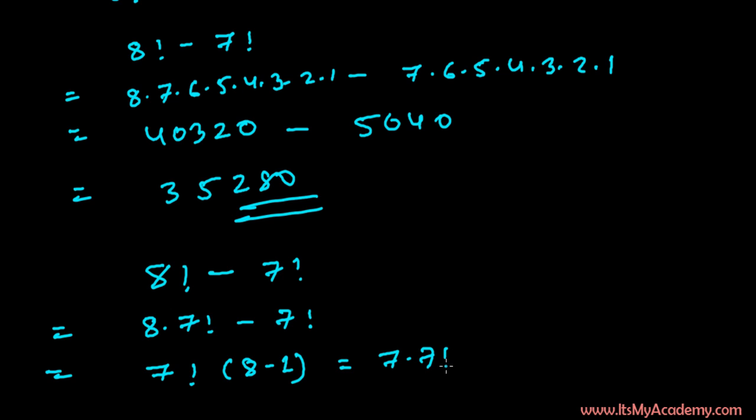Then it's going to be 7 times 7 factorial, and you can write 7 factorial as 7 times 6 times 5 times 4 times 3 times 2. You don't have to write times 1, because everyone knows that.